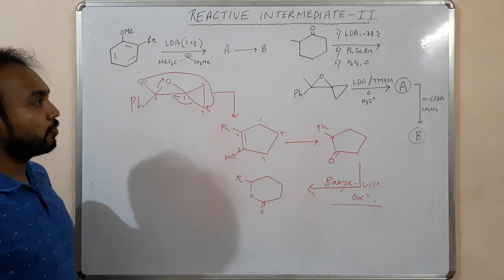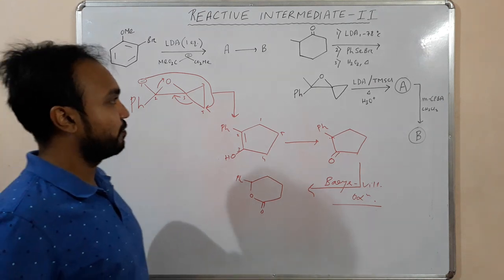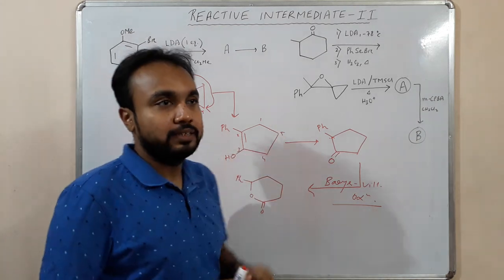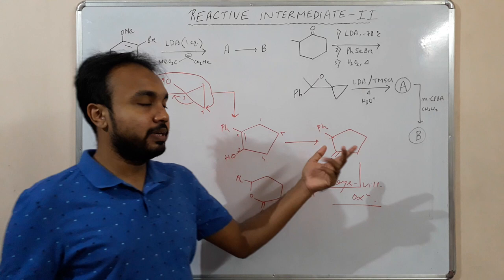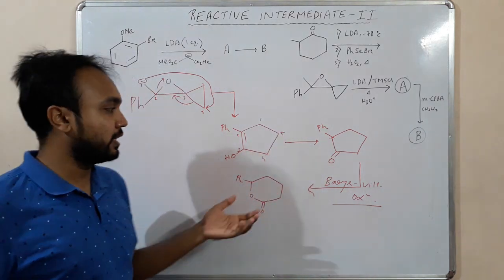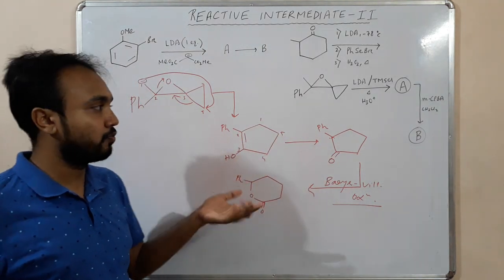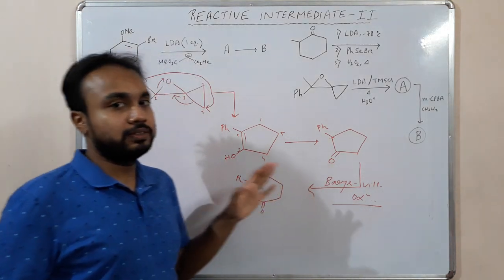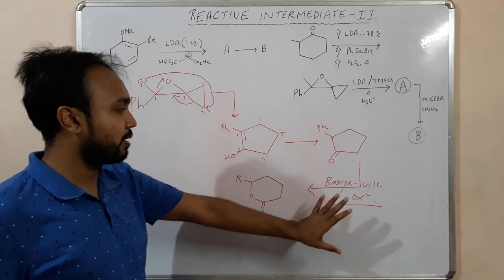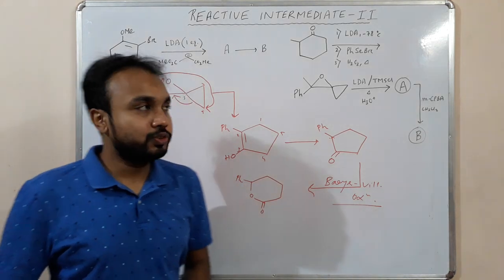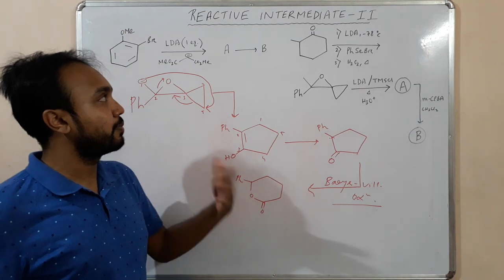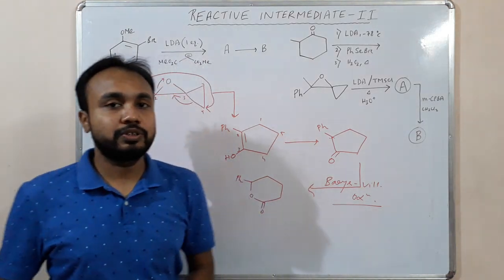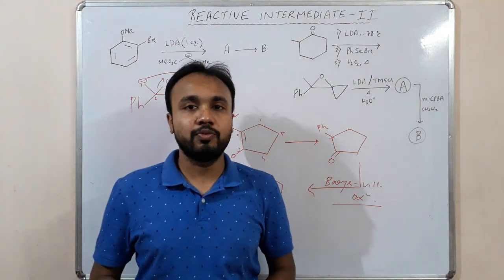In summary: when you see LDA, think about which proton is most acidic. When you see mCPBA with a double bond, consider epoxidation; if it's a ketone, consider Baeyer-Villiger oxidation. I'll keep uploading more examples of reactive intermediates in upcoming videos. Hope you liked the video — thank you very much!